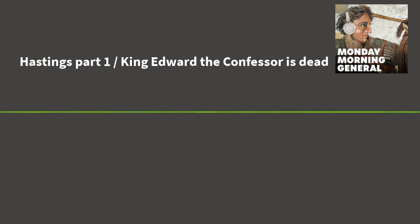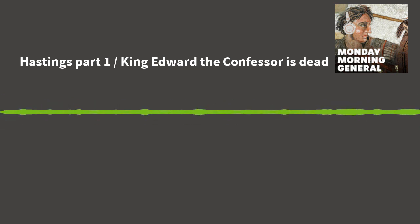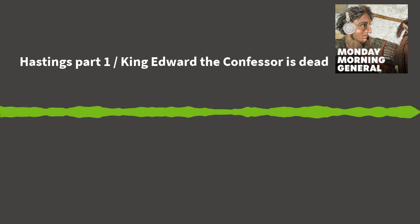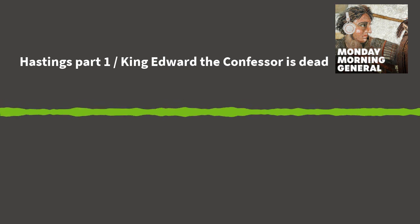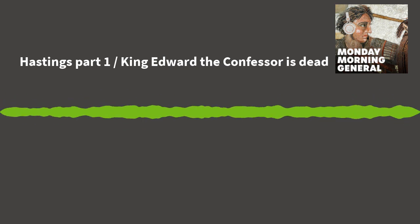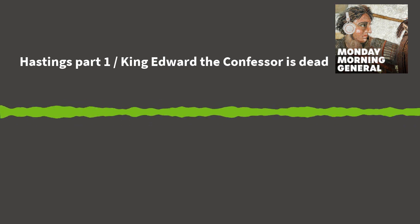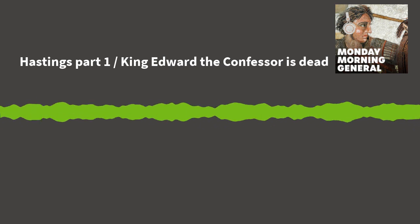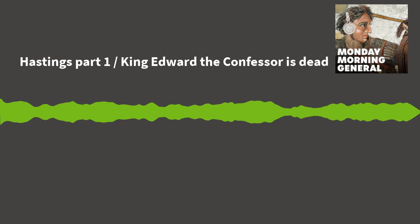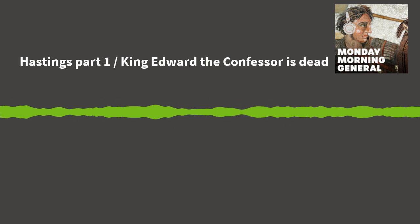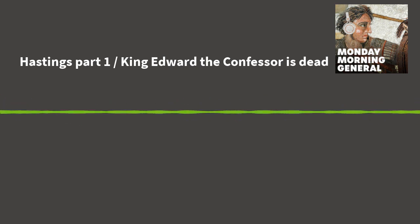A lot of times you see one army or one king facing off against another, but in this one there are a lot of key figures we need to talk about. We thought it would be better to lay those people out at the front end to get everyone acquainted with the leadership. The first is William, Duke of Normandy. He was born in Falaise, Normandy, around 1028 or 1029, and inherited the Duchy of Normandy at the age of seven.